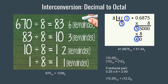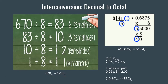Suppose we have a decimal number 670 and we want to convert it into octal. We start off by dividing 670 by 8. What we get is 670 divided by 8 equals 83 as quotient and 6 as remainder. Now we divide 83 by 8 and get 10 as quotient and 3 as remainder.